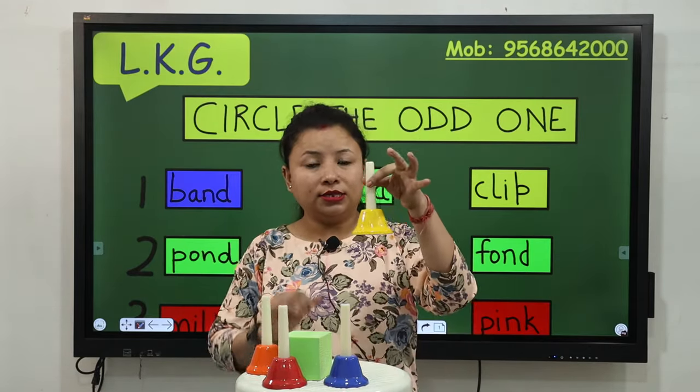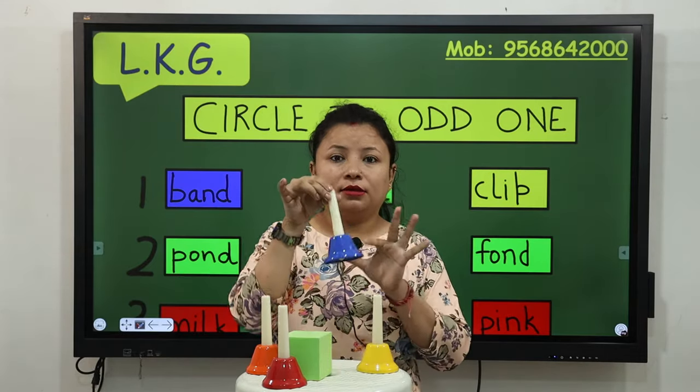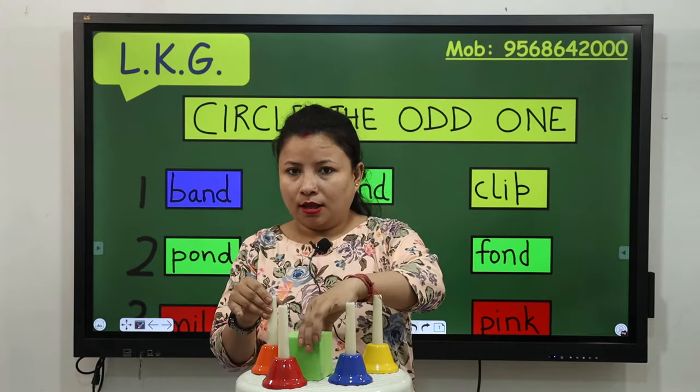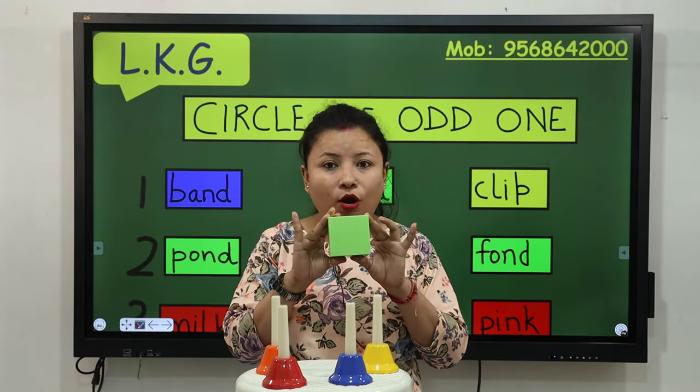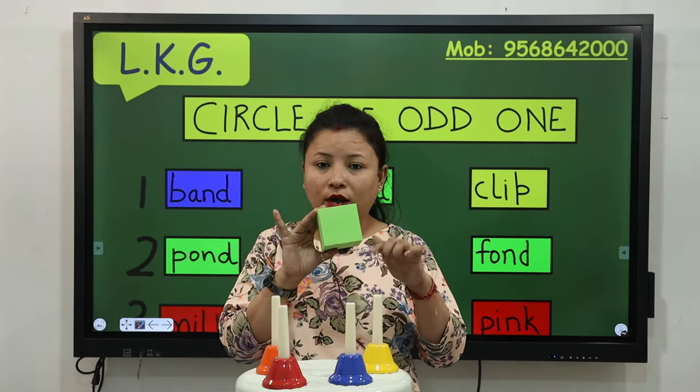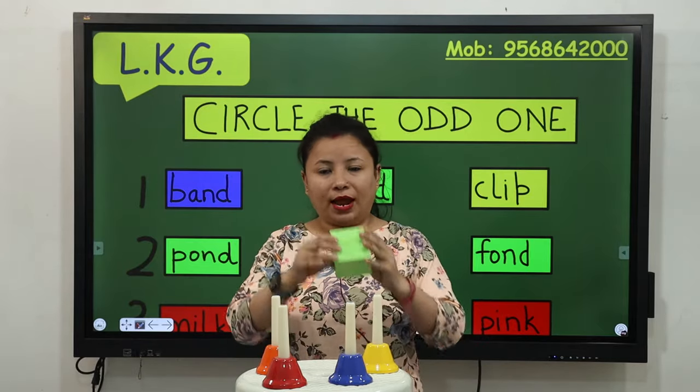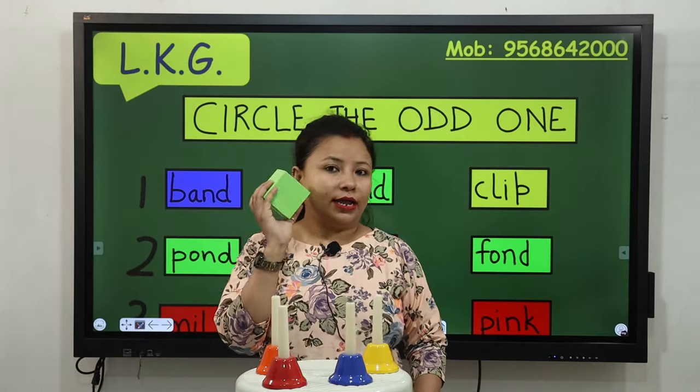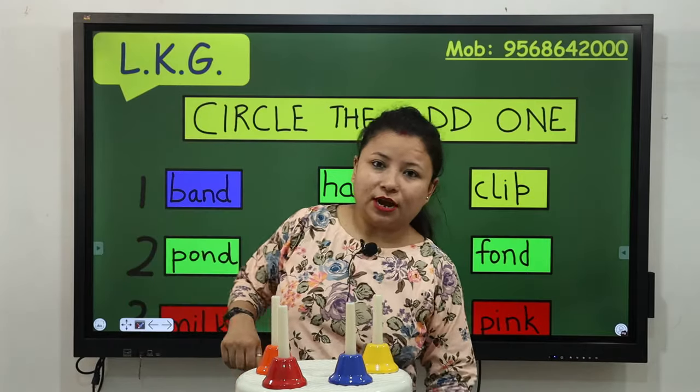Look here, this is bell and this is bell and this is bell. No, this is block. So it is same, it is same like others. No, so this is the odd one. So I will pick it up and keep it aside. So now this is odd. Like this we will show you on the board. Now shall we start.